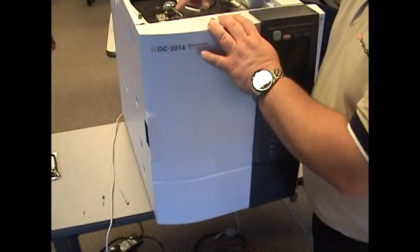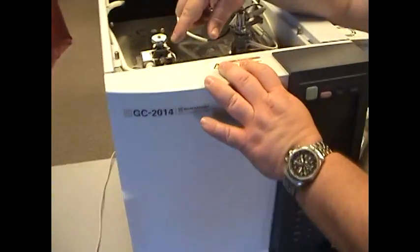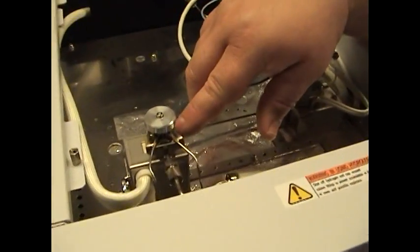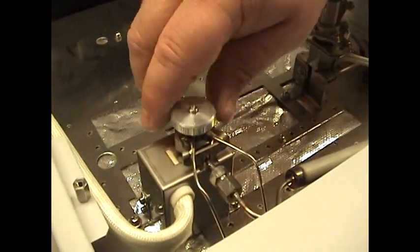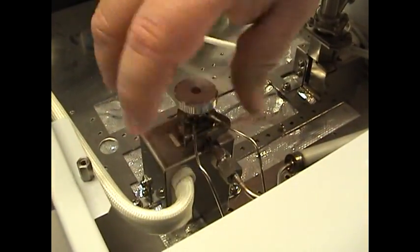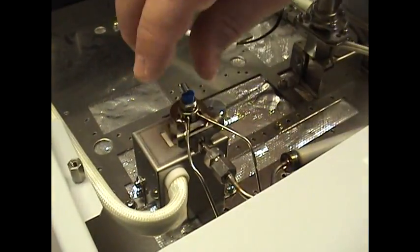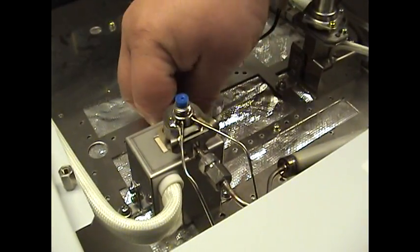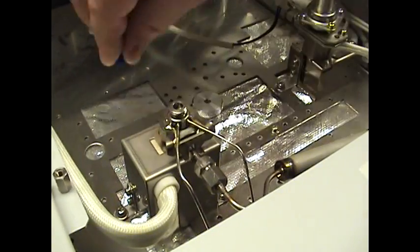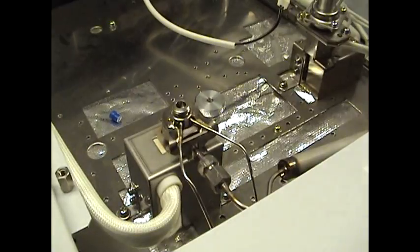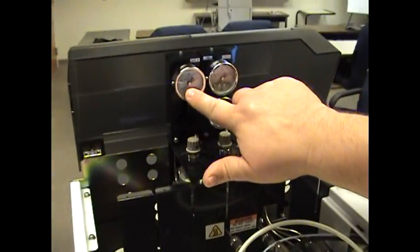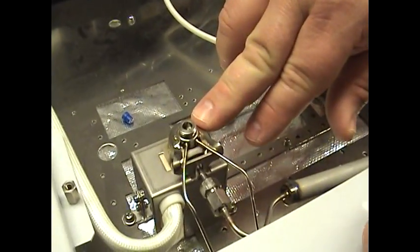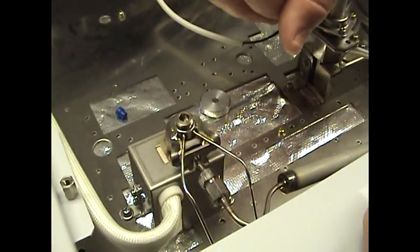Alright, in this segment, we'll discuss how to change the glass liner or the glass insert in the GC2014. In the previous segment, we discussed how to change the SEPTA, so we're not going to go through those steps again. However, the same precautionary steps must be taken. Makeup air needs to be zero. The injection port must be cooled and the instrument should be turned off.